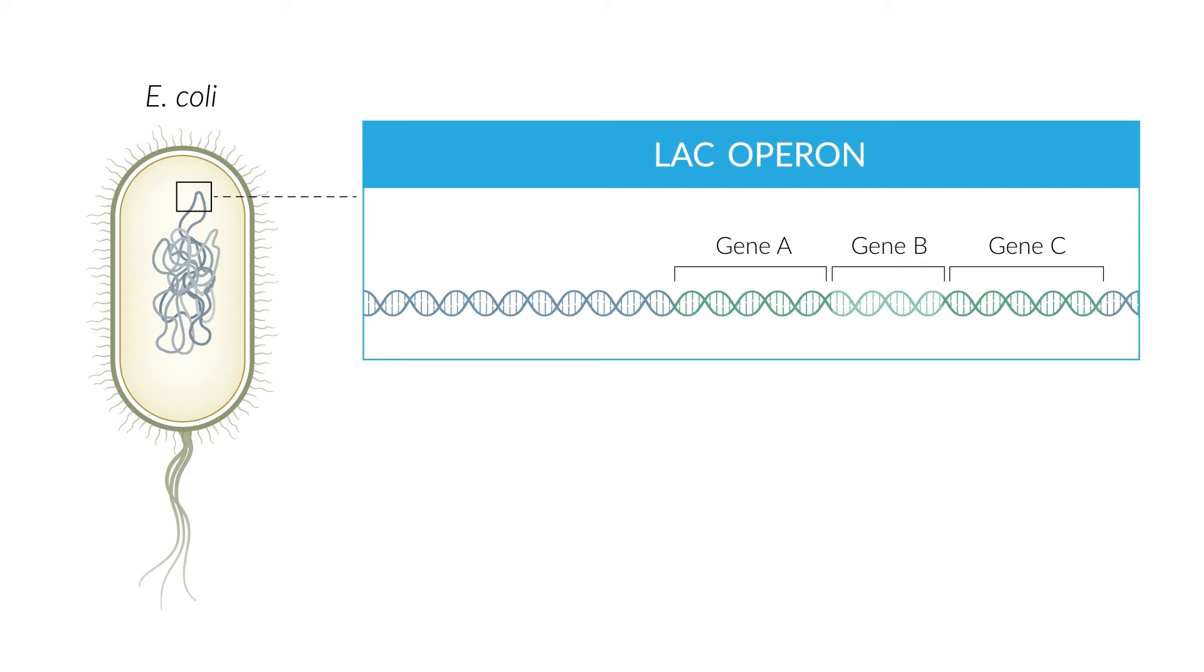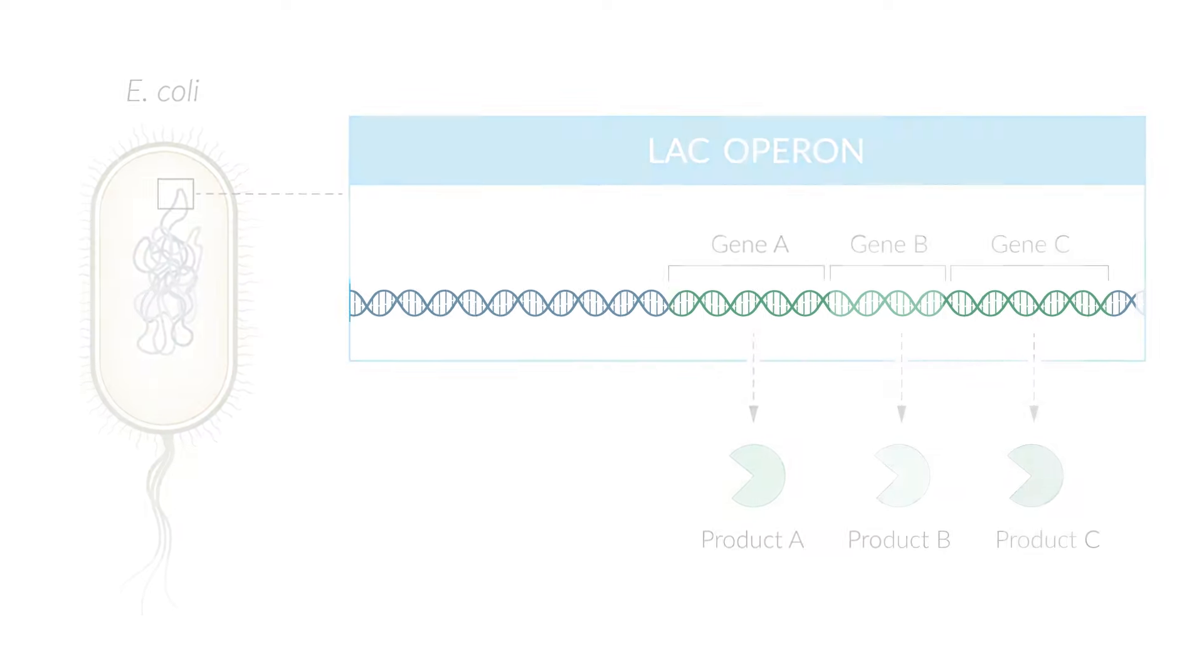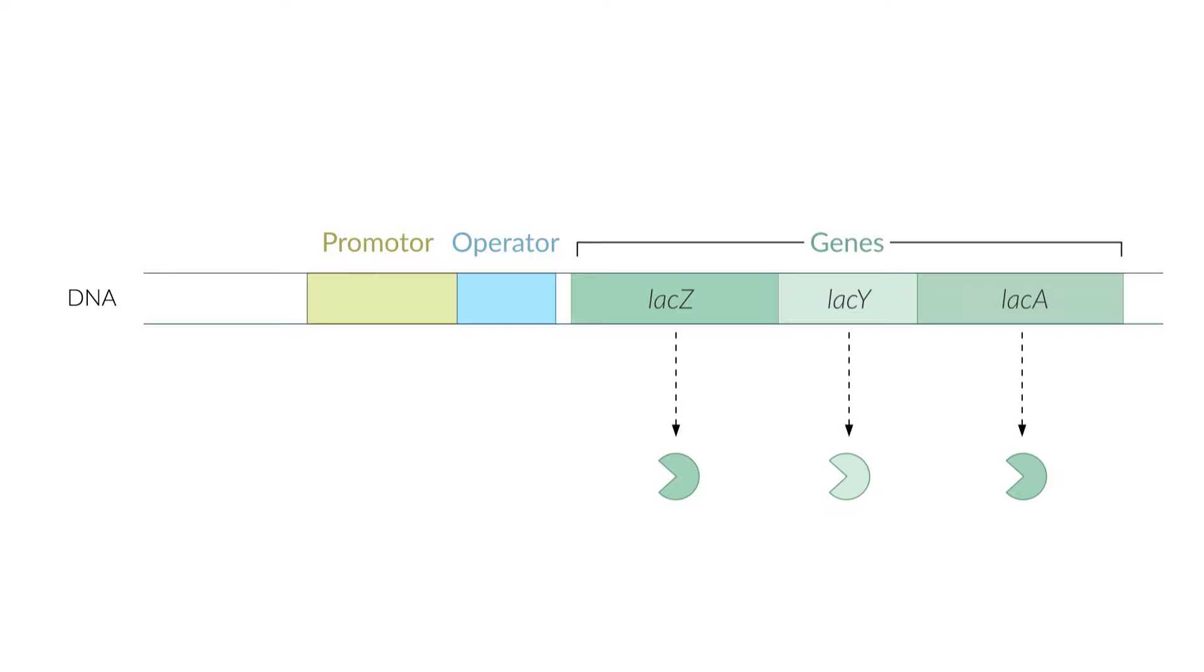An operon is a transcription unit of genes whose products are required under identical circumstances, so it facilitates the coordinated expression of multiple genes. The DNA sequence of an operon comprises three different components: a promoter, an operator, and several genes, each of which codes for a protein.